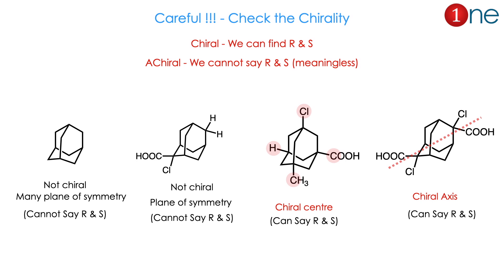Here is an important warning before we get into configuration. You should be careful with chirality — only if a compound is chiral can we find R and S. If it is achiral, there is no point in saying R and S. If adamantane is a simple unsubstituted one, it is not a chiral compound — it has many planes of symmetry, so we cannot say R and S. Similarly, with one-side terminal attachment it has rotational symmetry, so it also lacks R and S. With a chiral center having four different groups, yes, we can say R and S. With a chiral axis having both terminals different, yes, we can say R and S. So be careful with chirality and the plane of symmetry.